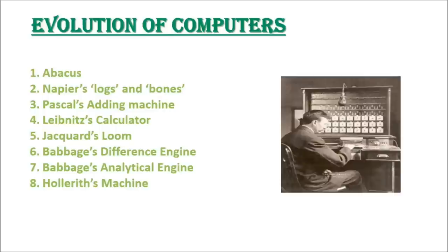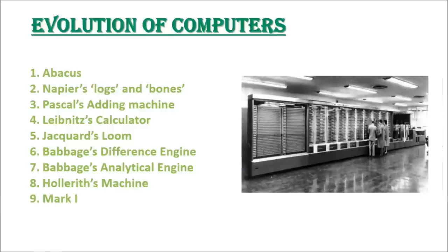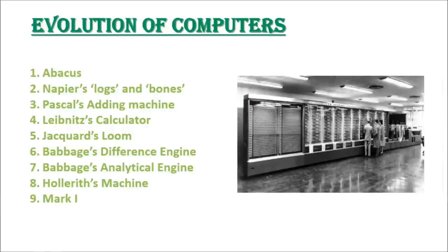Ninth, Mark I: In 1943, an electromechanical computer named as Mark I was invented which could multiply two digit numbers in five seconds, a record at that time. This was first operational general purpose computer.